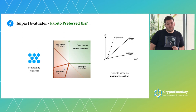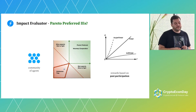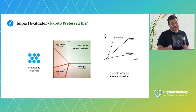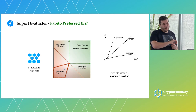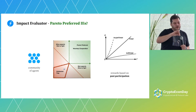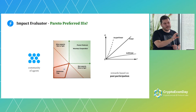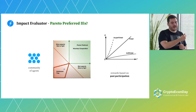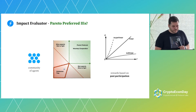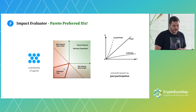There might be a way to do a Pareto preferred impact evaluator — not just a positive sum game where the net total is stronger, but you can actually yield a situation that is Pareto preferred where people enter into voluntary cooperation. A way to do that might be by issuing rewards based on past participation — introducing some memory into the system that can track contributions over time and factor that into the system. There might be other ways to do this, but it's just speculation.